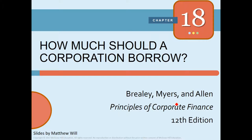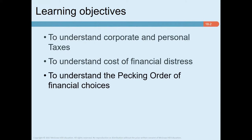Welcome to the lecture videos. We continue to discuss capital structure decisions. This week we cover Chapter 18 and Chapter 19, starting with Chapter 18: how much should a corporation borrow? We have a couple of learning objectives — we will talk about corporate and personal taxes, and we will understand the cost of financial distress and theories of financial choices.